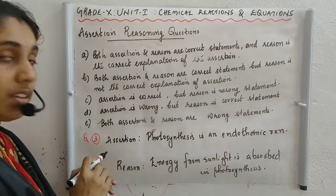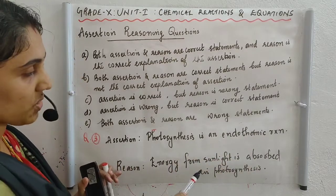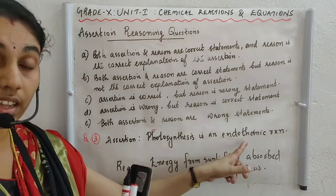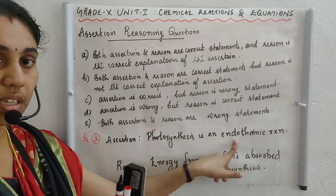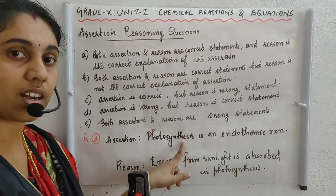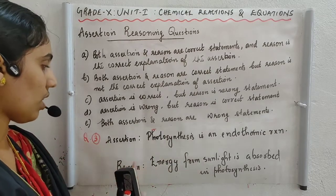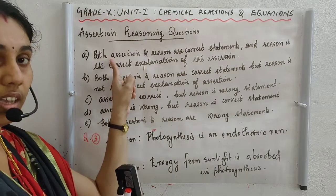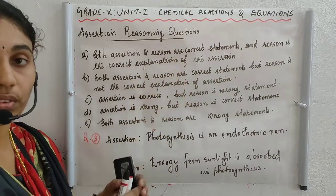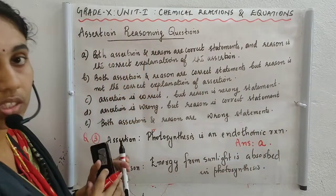Question 3 — Assertion: photosynthesis is an endothermic reaction. Reason: energy from sunlight is absorbed in photosynthesis. We know photosynthesis is endothermic because energy is absorbed during the reaction — specifically, sunlight is absorbed. Both statements are correct and reason correctly explains the assertion. The answer is option A.